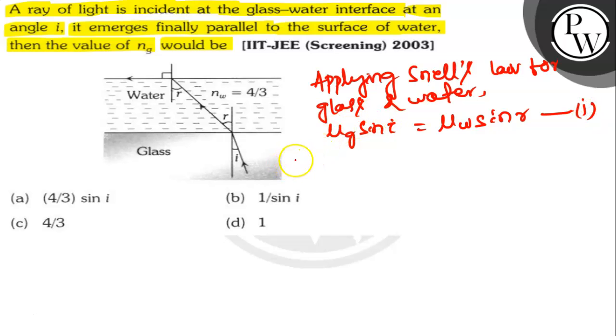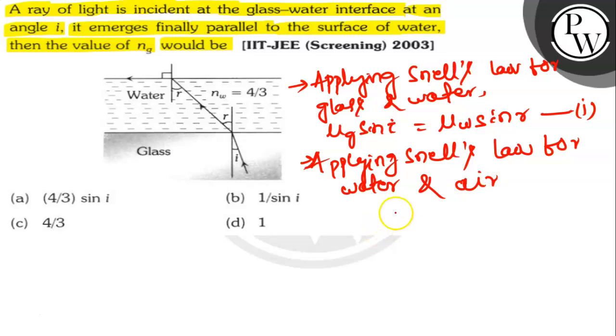Now applying Snell's law for water and air, μW sin R is equal to μA sine 90 degree. This is equation 2.